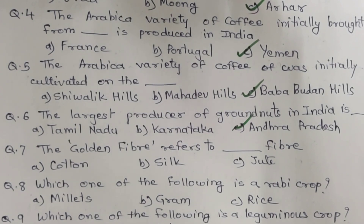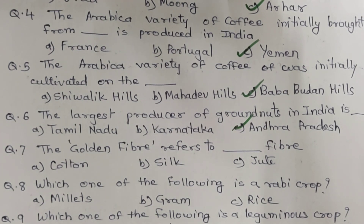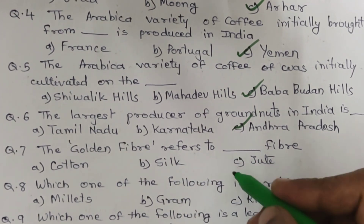Question 7. The golden fiber refers to which fiber? Options are A. Cotton. B. Silk. C. Jute. And the correct answer is C. Jute.